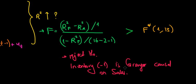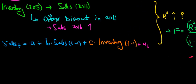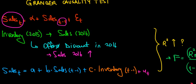This is the conclusion we give. It's not direct causality, but Granger causality — meaning inventory would lead to an increase in sales in the next period through the mechanism we described: offering a discount in the next period, which increases sales. And that's it — hope this makes sense.